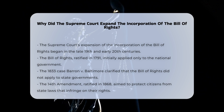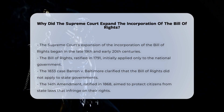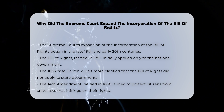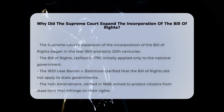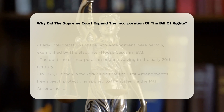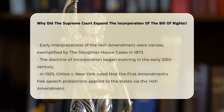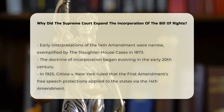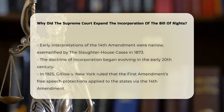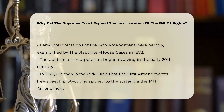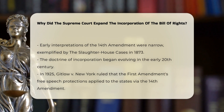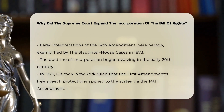The landscape changed significantly with the ratification of the 14th Amendment in 1868. This amendment declared that no state shall make or enforce any law which shall abridge the privileges or immunities of citizens of the United States. However, the Supreme Court initially interpreted this amendment narrowly, as seen in cases like the Slaughterhouse Cases 1873, which limited the 14th Amendment's reach.